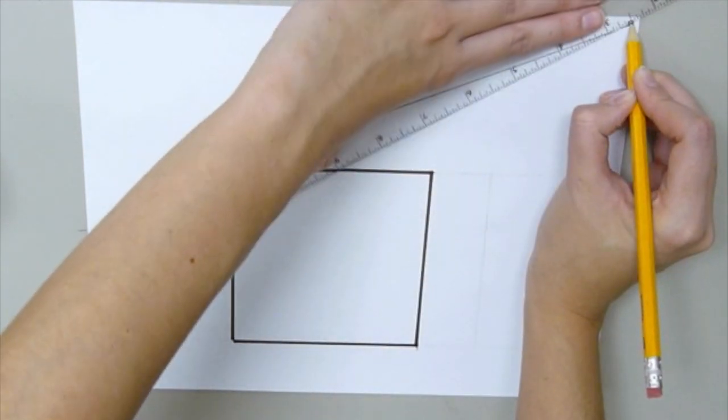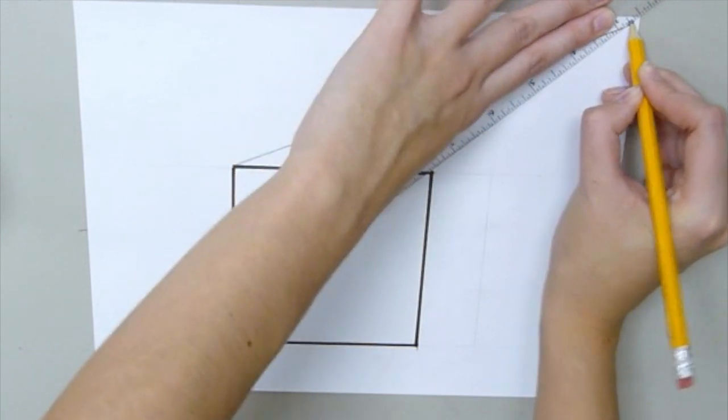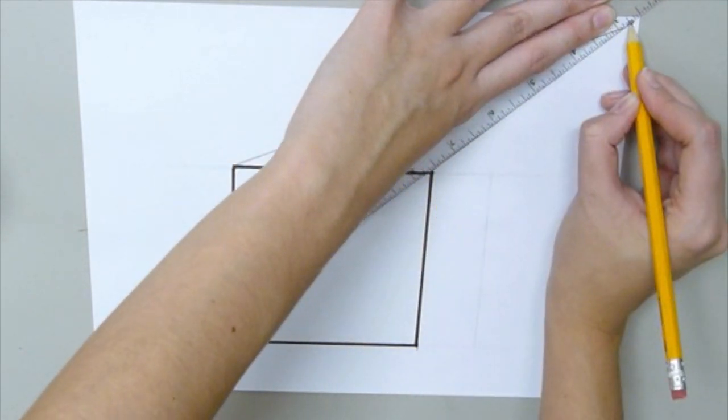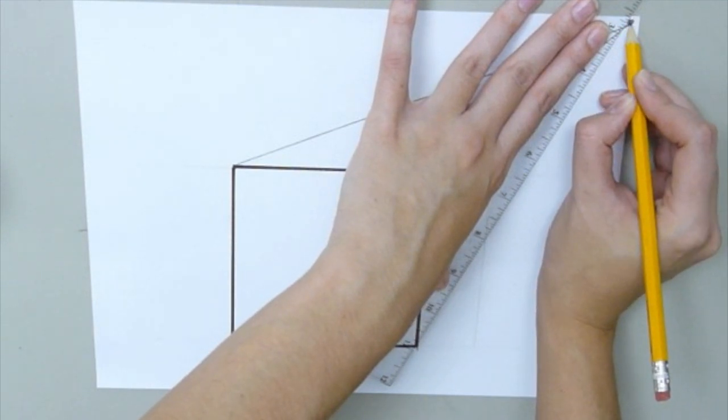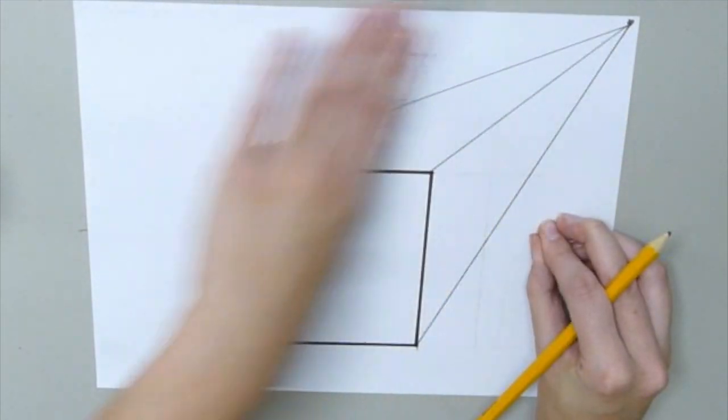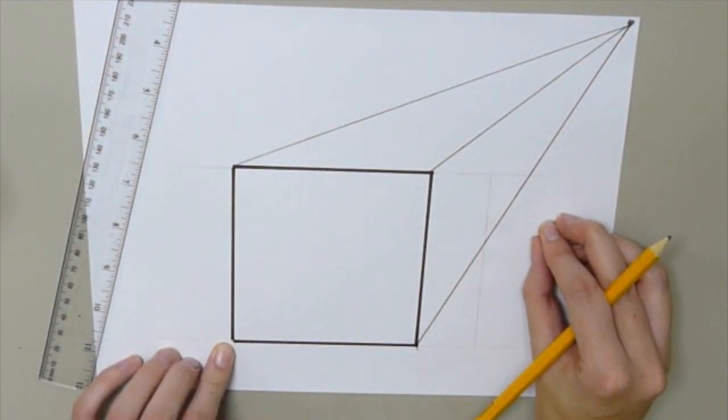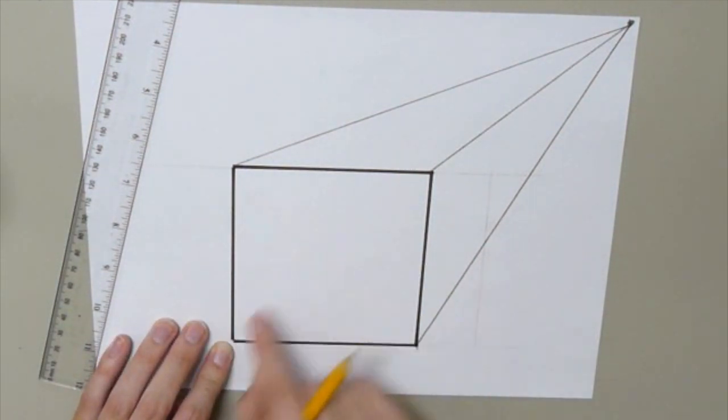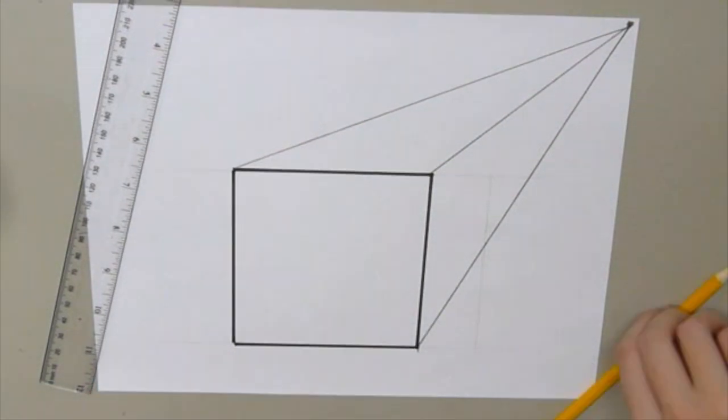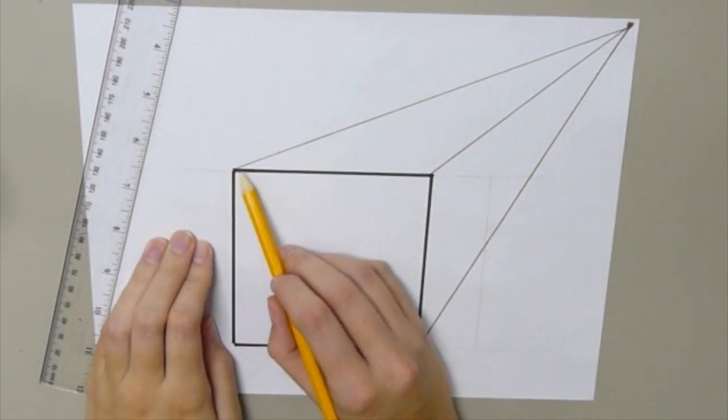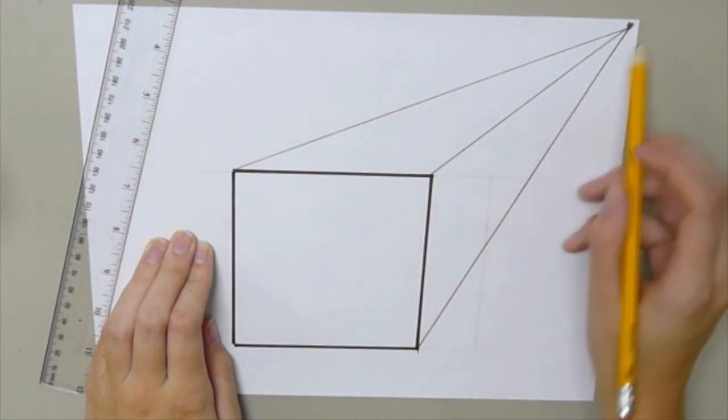That's 1, swing it, that's 2, swing it, and that is 3. Now I'm not going to do this corner because we don't see that side of our cube. So here I have all of my lines from the corners of my square to my vanishing point.